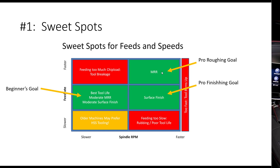For a finish pass, where you want to minimize work after taking the part off the machine, you stay at a very similar spindle RPM and just slow down the feed rate a bit to get a better surface finish. That's really what you need to know about sweet spots. Print out the diagram, stick it up on the wall — it's always easier to remember things visually.